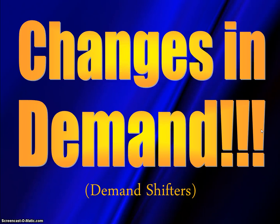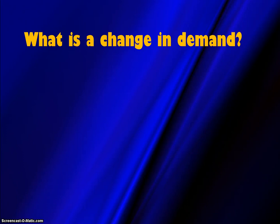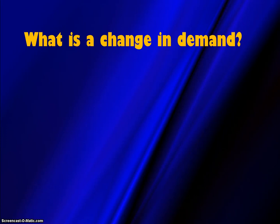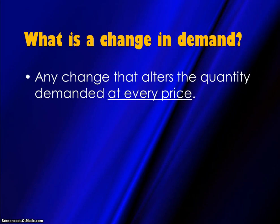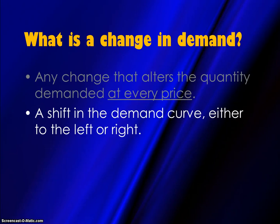Some things will occur in markets that cause the whole demand curve to actually shift, and we call these demand shifters. These demand shifters will cause a change in demand. When price changes, it causes a change in quantity demanded — a movement along the curve that's already there. But when a demand shifter happens, it causes a change in demand, which alters the quantity demanded at every price. So the curve will actually shift to the left or to the right.